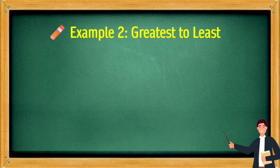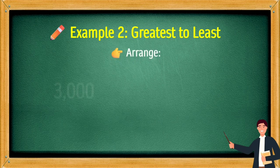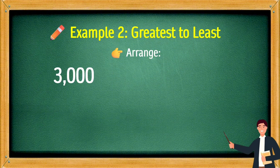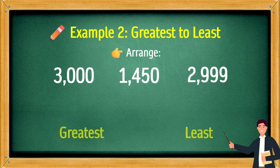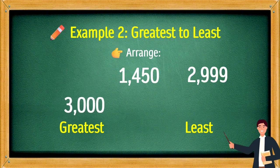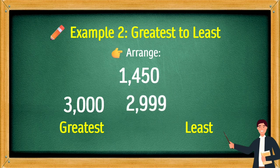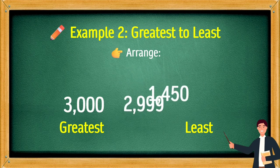Example 2: Greatest to least. Arrange 3,000, 1,450, and 2,999. The greatest number is 3,000, next is 2,999, and the least is 1,450.